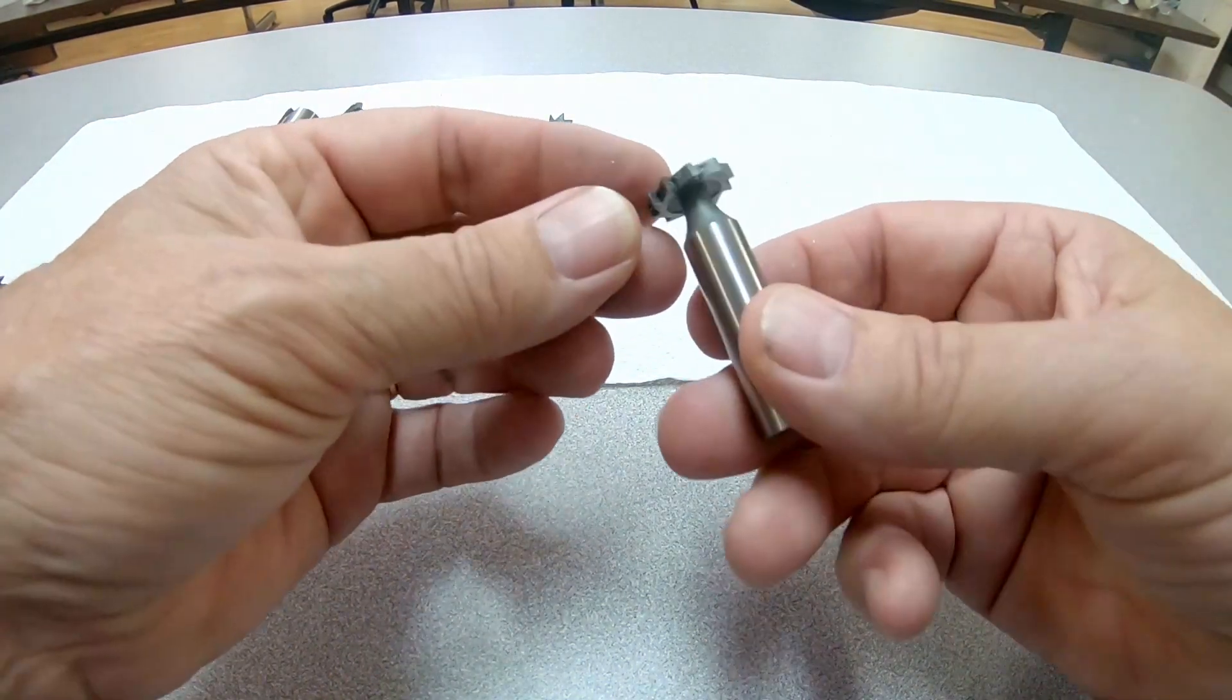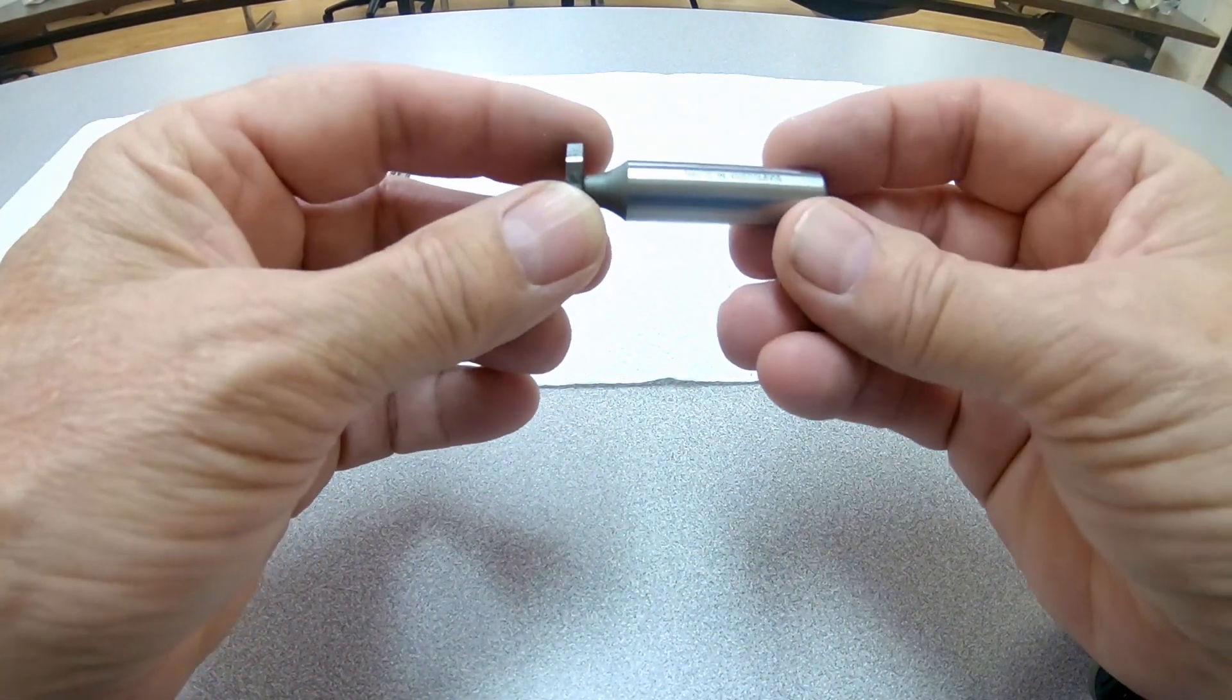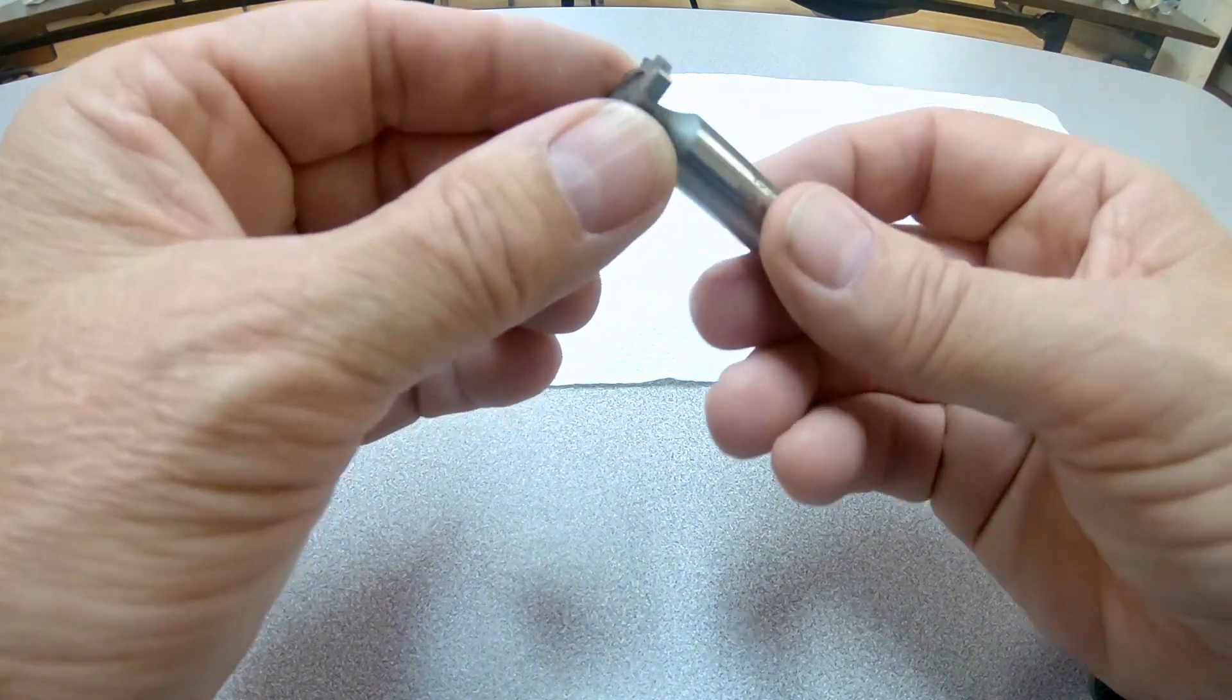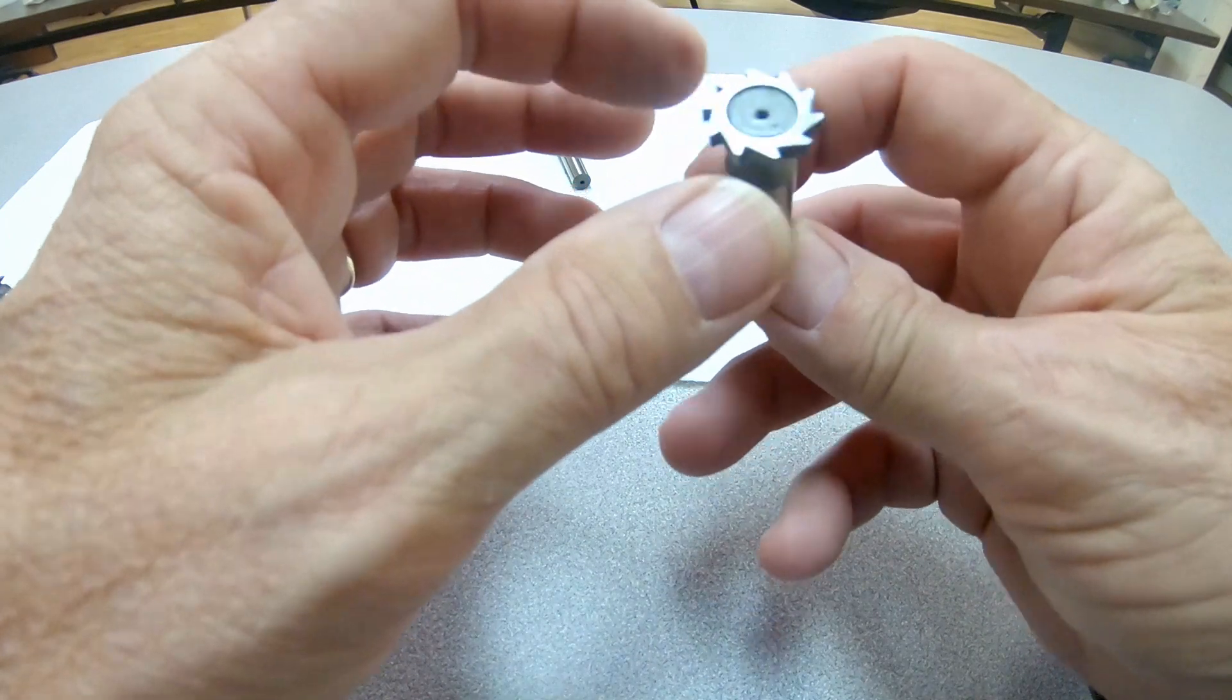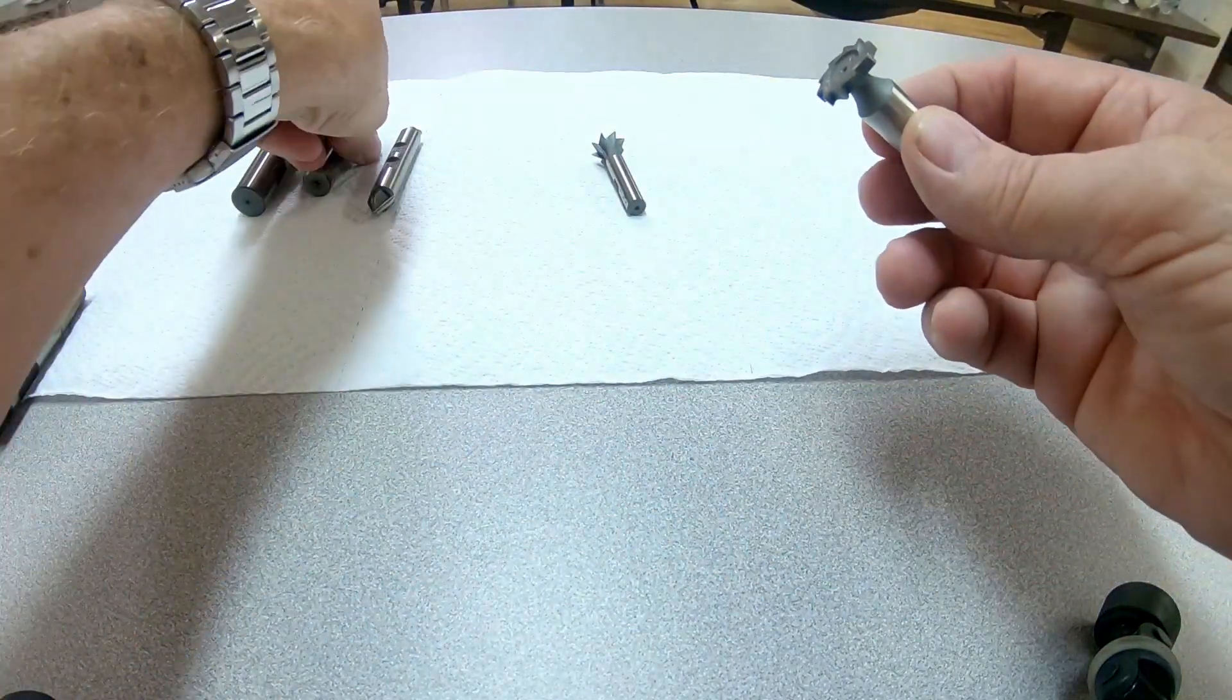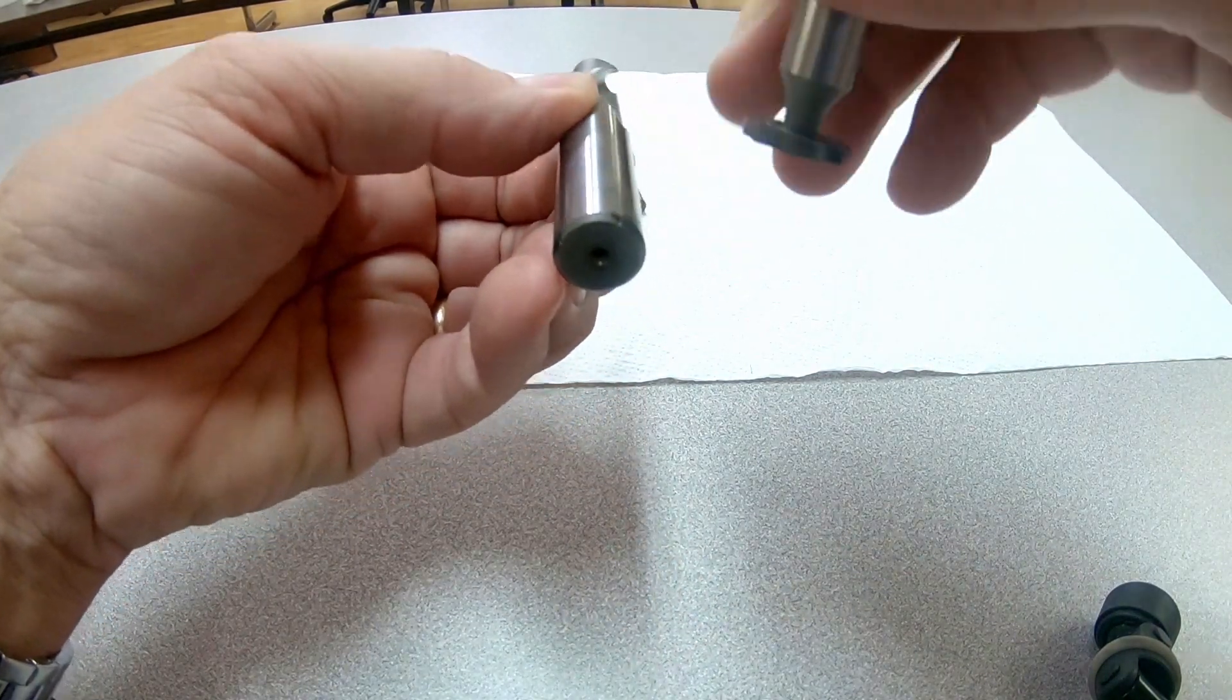The last one I have here is a Woodruff key cutter. Made in Yugoslavia. It's number 406. This is for a number 406 Woodruff key. I haven't measured this particular one, but I would guess it'd be about an eighth inch by maybe three quarters of an inch. These are great, not only for cutting a Woodruff key slot in a shaft, you'd come up and cut a Woodruff key kind of like this, a slot.